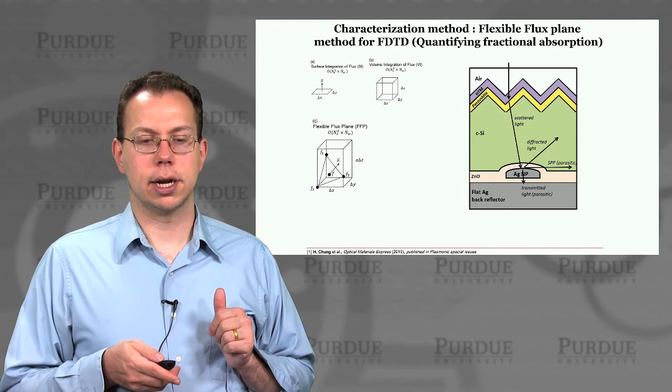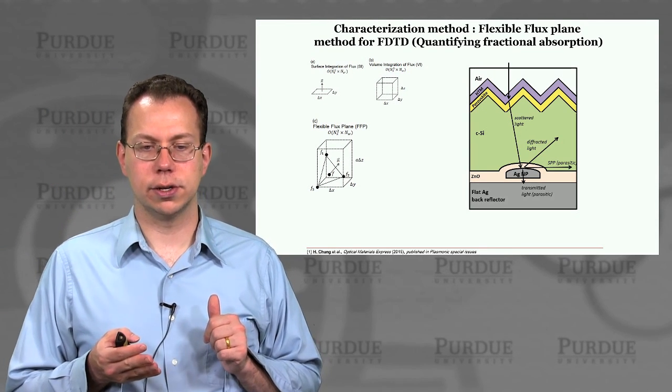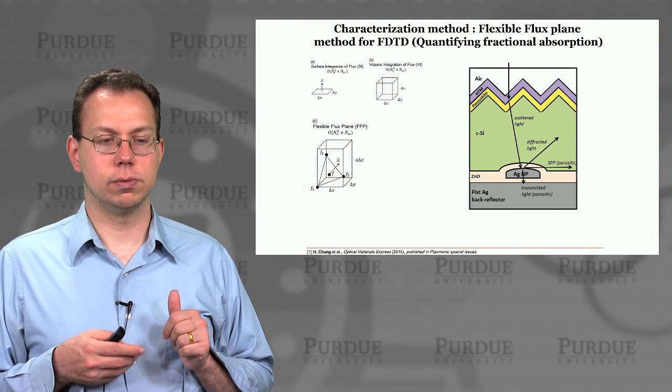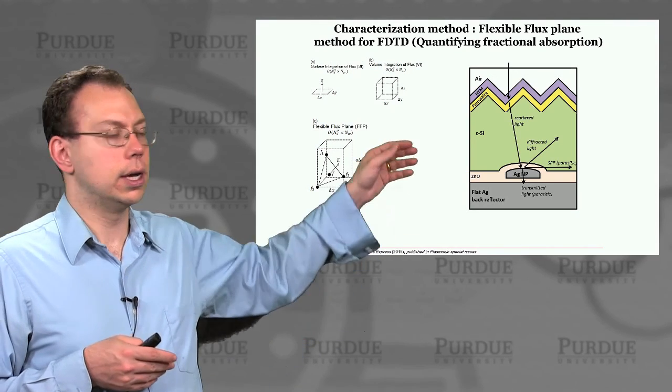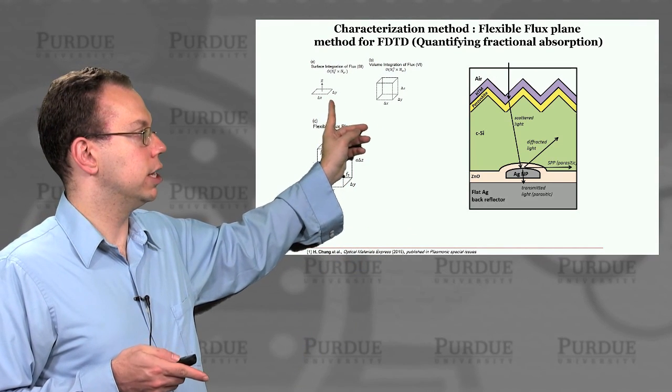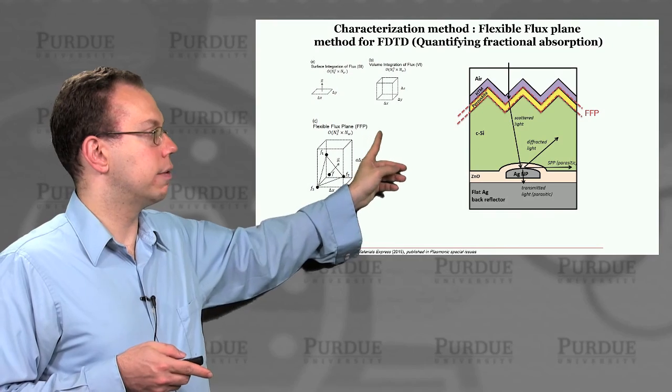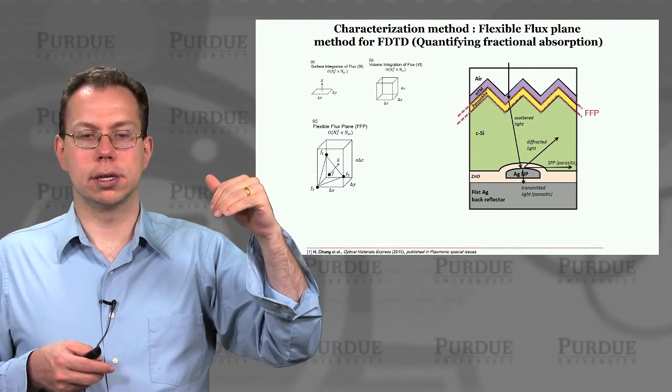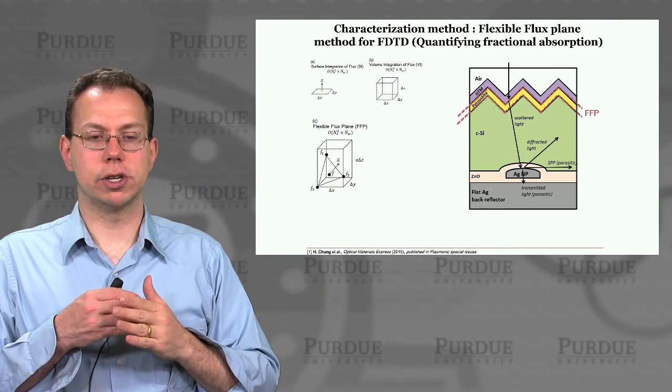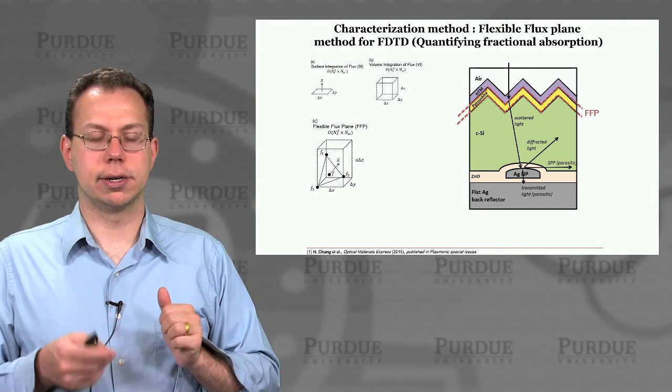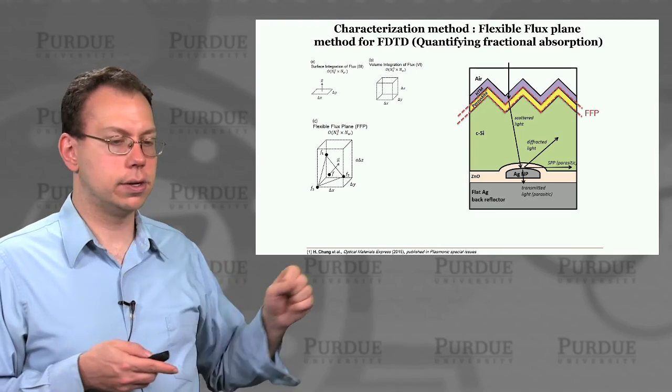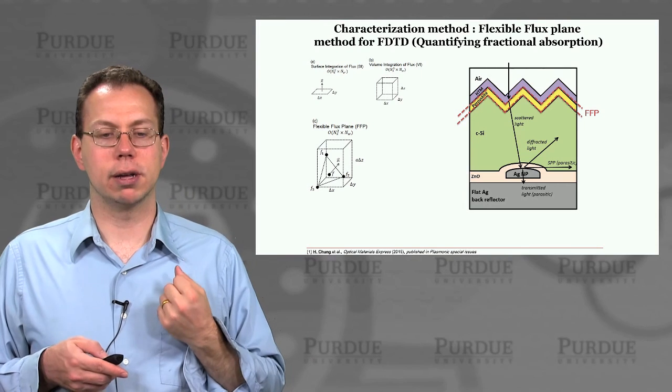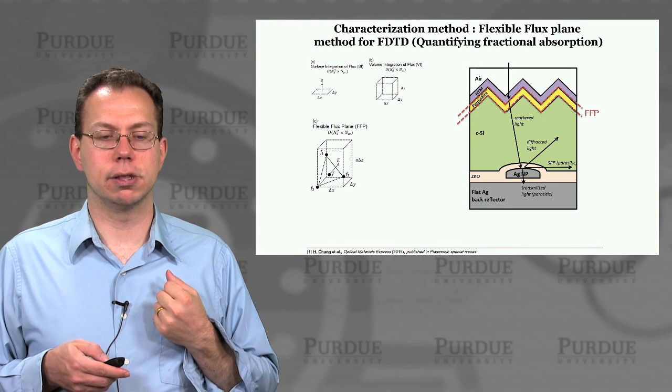But our approach now is actually using a flexible flux plane method, in which we would kind of get the best of both worlds. One of which is to have that surface integration feature, but also to have it flexible enough so that you can exactly go around the contours of the boundaries, which are not flat in the system, and then allow you to, for example, look at the absorption just of this yellow layer, perovskite, by putting flexible flux planes around both boundaries.